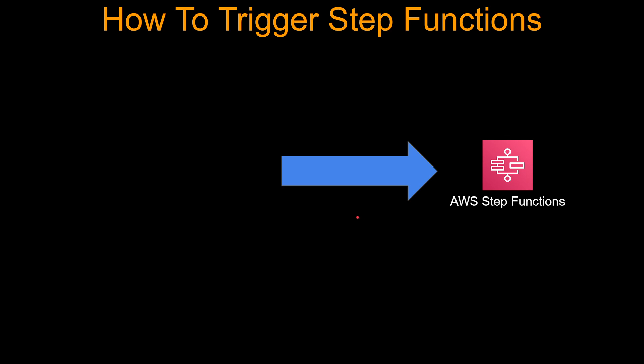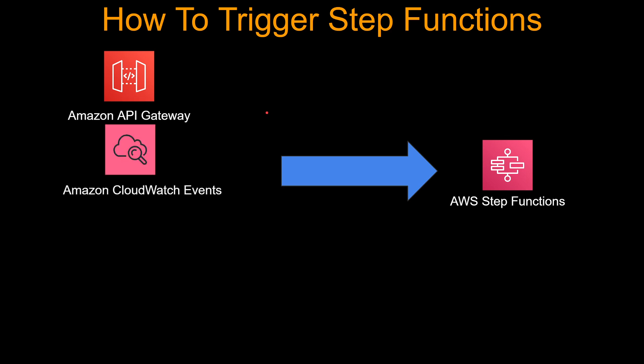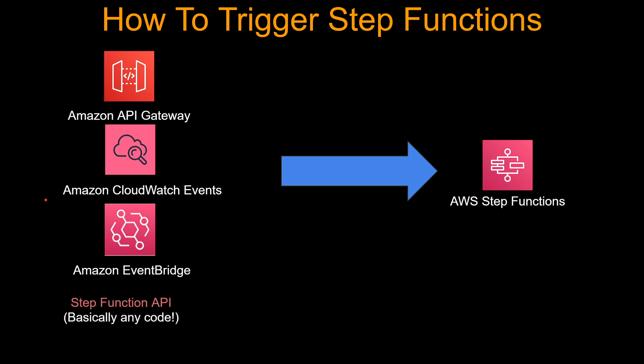How do you trigger step functions? Amazon API Gateway can call step functions directly. Amazon CloudWatch Events can call step functions — this is super powerful because a lot of AWS services integrate out of the box with CloudWatch Events, such as EC2 state changes. You can even scrape CloudTrail logs and generate CloudWatch events to invoke step functions. Next is Amazon EventBridge, and then the Step Functions API itself — so basically any code: Lambda, EC2, EKS, and many more.